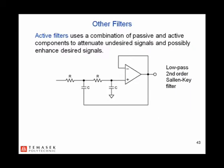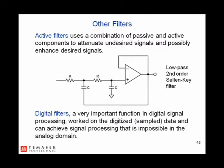Active filters use a combination of passive and active components to attenuate undesired signals and possibly enhance desired signals. Digital filters, a very important function in digital signal processing, work on digitized data and can achieve signal processing that is impossible in the analog domain.